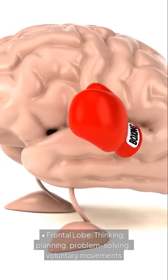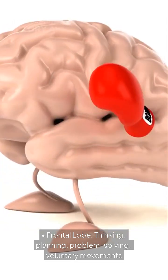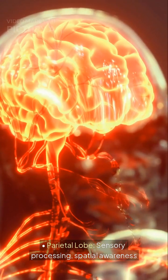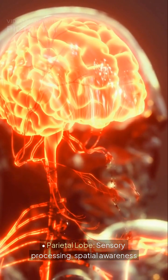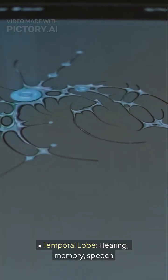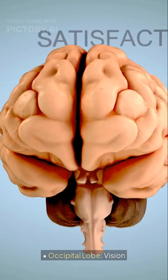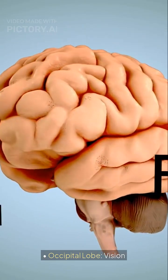The cerebrum has four lobes. Frontal lobe: thinking, planning, problem solving, voluntary movements. Parietal lobe: sensory processing, spatial awareness. Temporal lobe: hearing, memory, speech. Occipital lobe: vision.